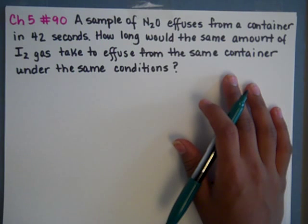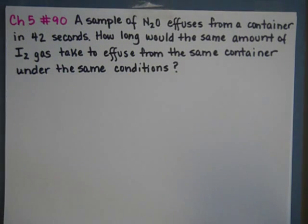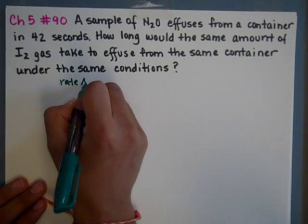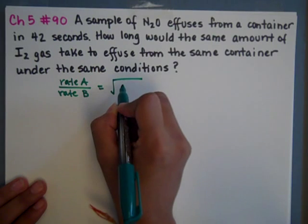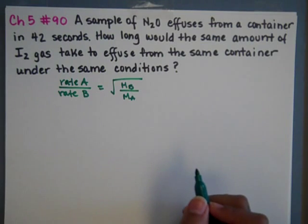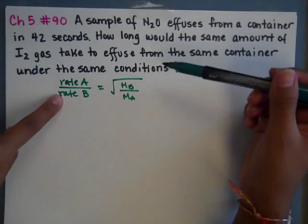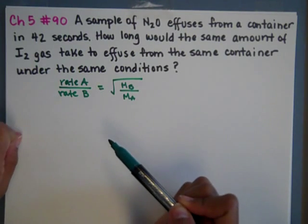So we have Graham's Law. We've been given time, which can be converted to a rate, and we're looking for the iodine gases' time to do the same thing. So we're going to use Graham's Law, which is rate of A over rate of B equals the square root of the molar mass of B over the molar mass of A. Remember, it's A over B, and under the square root, it's B over A. So they are flipped. These two will match, and these two will match on their information.